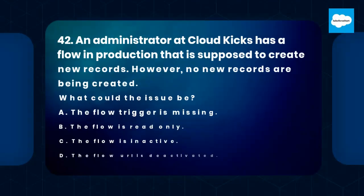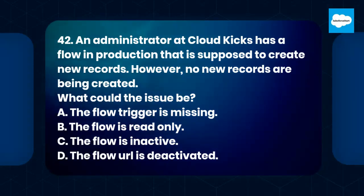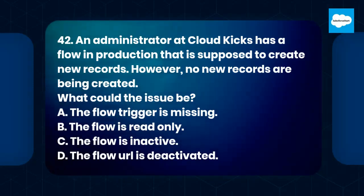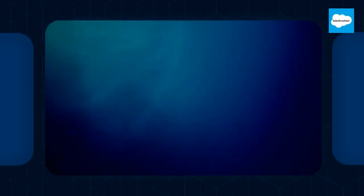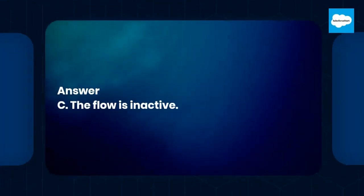Question 42: An administrator at CloudKicks has a flow in production that is supposed to create new records. However, no new records are being created. What could the issue be? A. The flow trigger is missing. B. The flow is read only. C. The flow is inactive. D. The flow URL is deactivated. Answer: C. The flow is inactive.